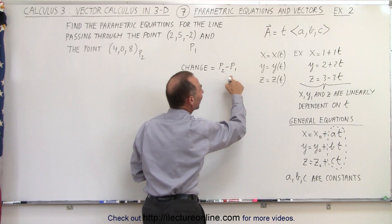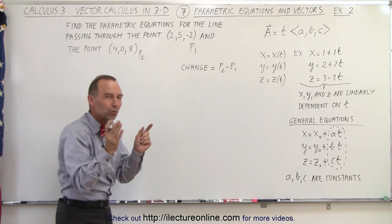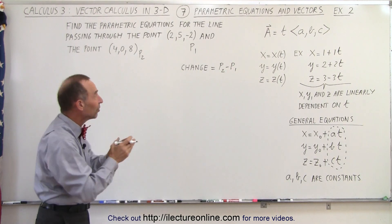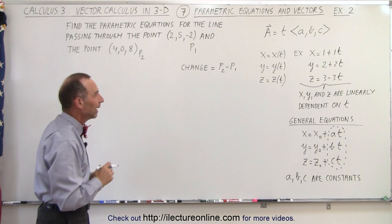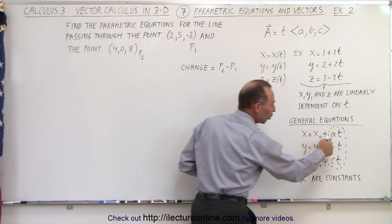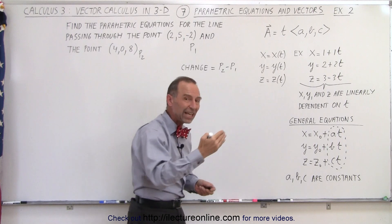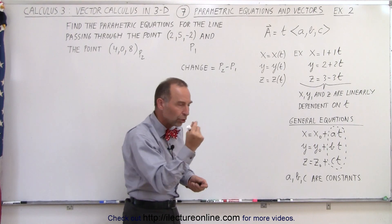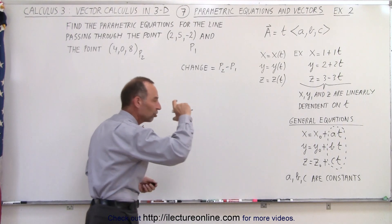Because the change is going to be defined as point 2 minus point 1. We're going to define the change in x, y, and z by subtracting the values for x, y, and z of the two points. And that's going to then become the slope because the change is the same as the slope per unit run.